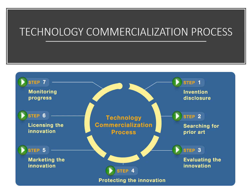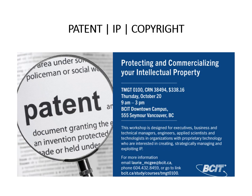The technology commercialization process consists of seven steps: first, invention disclosure; second, searching for prior art; third, evaluating the innovation; fourth, protecting the innovation; fifth, marketing the innovation; sixth, licensing the innovation; and last, monitoring the progress. Next we move to patenting IP or copyright for our product.